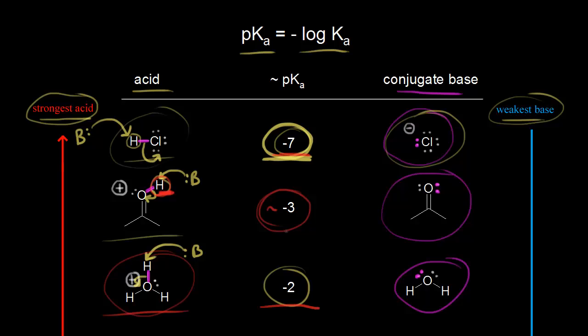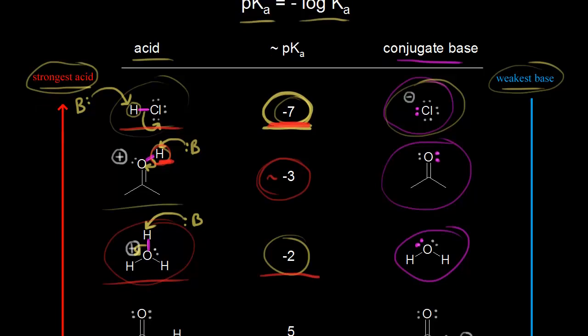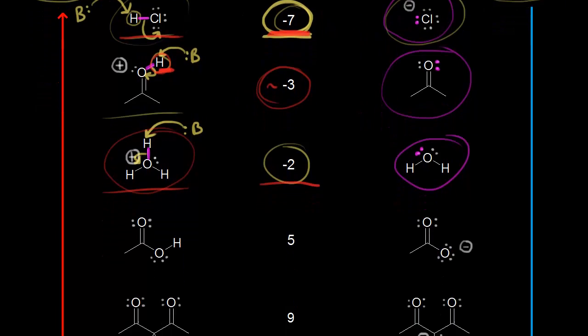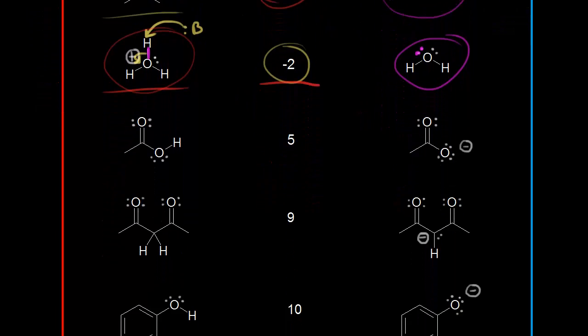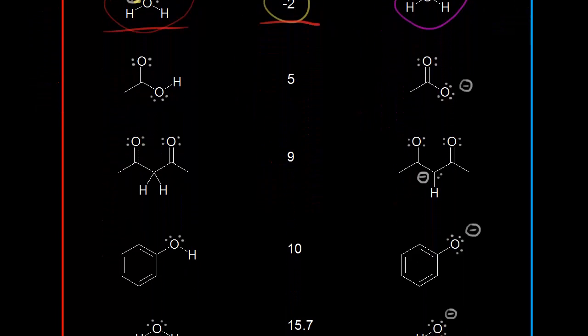Or we could say it the other way around: HCl has a lower pKa value, therefore HCl is a stronger acid than H3O+. Let's look at some more examples for acids and pKa values.